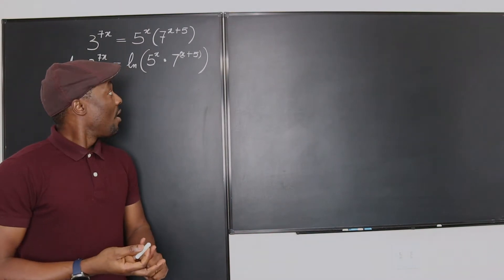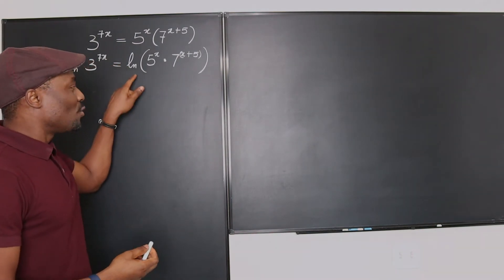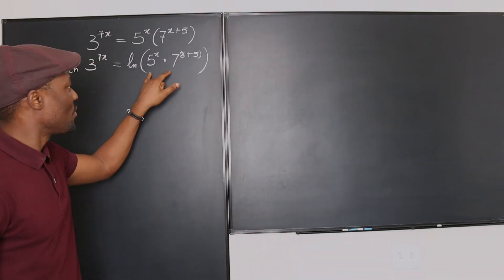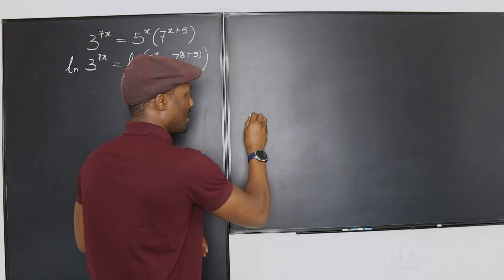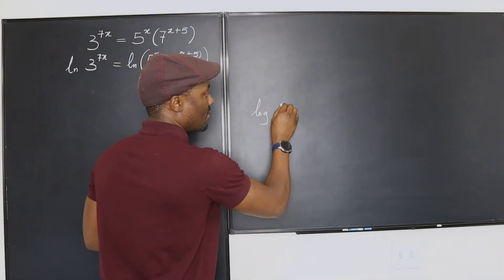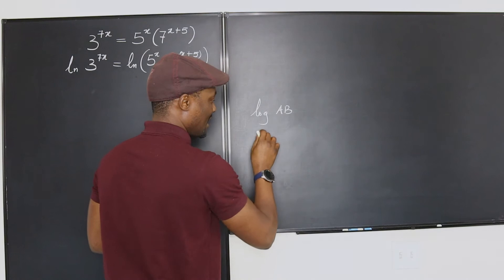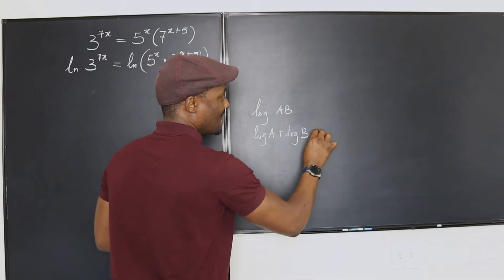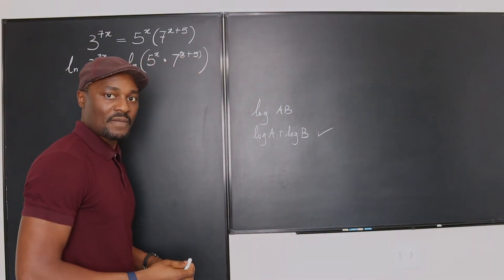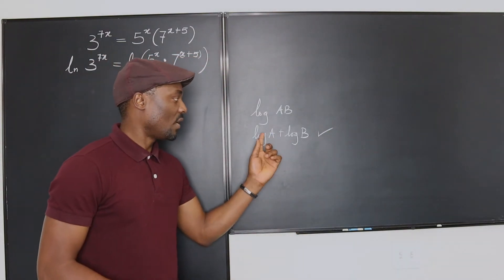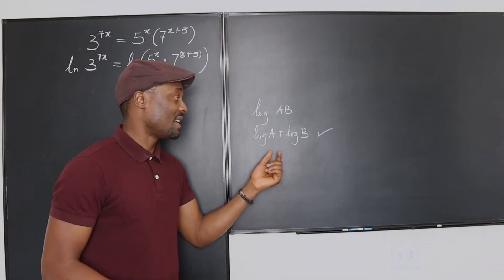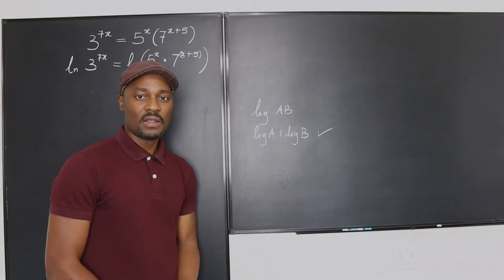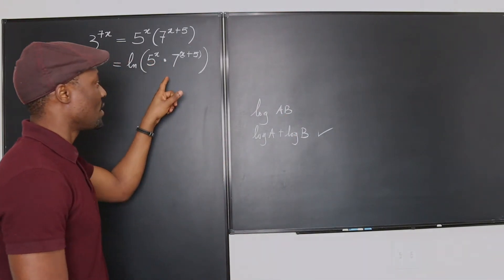And the next thing is now to remember your rules of logarithms. It tells you that when you have this, log of a times b is the same thing as log a plus log b. This is what is correct. So you always remember this, that log a plus log b is the same thing as taking only one logarithm of the product of the two numbers that are there. So you want to remember that. And that's what we're going to apply here.